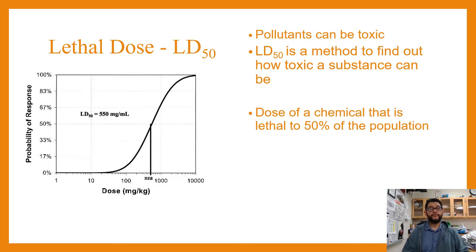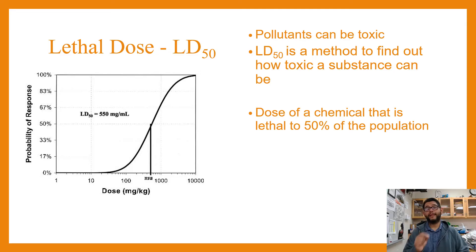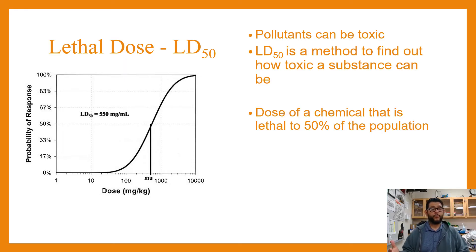For example, radioactive polonium is going to be 0.0000001 milligrams per kilogram — that's how little of it you need to kill half the population. Whereas something like table sugar, you need something like 5.4 kilos per kilogram. Literally, you need more sugar per mass of person to try to kill them.